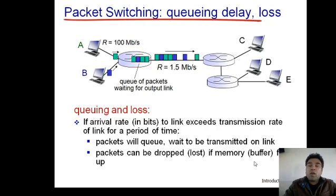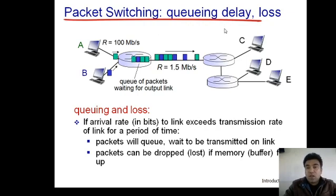The second key concept in packet switching is queuing delay. Queuing delay occurs when the arrival rate of bits at a link exceeds the transmission rate of that link for a period of time.